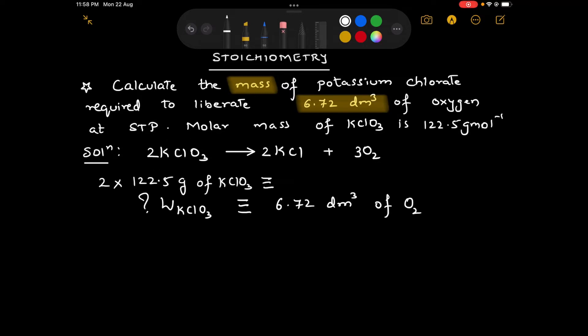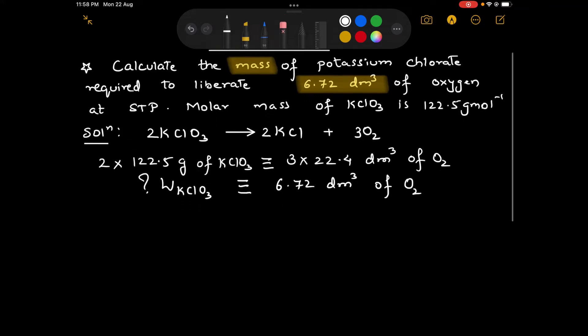This corresponds to the volume of oxygen gas. Let us consider the standard volume 22.4 decimeter cube of oxygen gas. Once again, the stoichiometric coefficient is 3, so multiply 22.4 by 3.